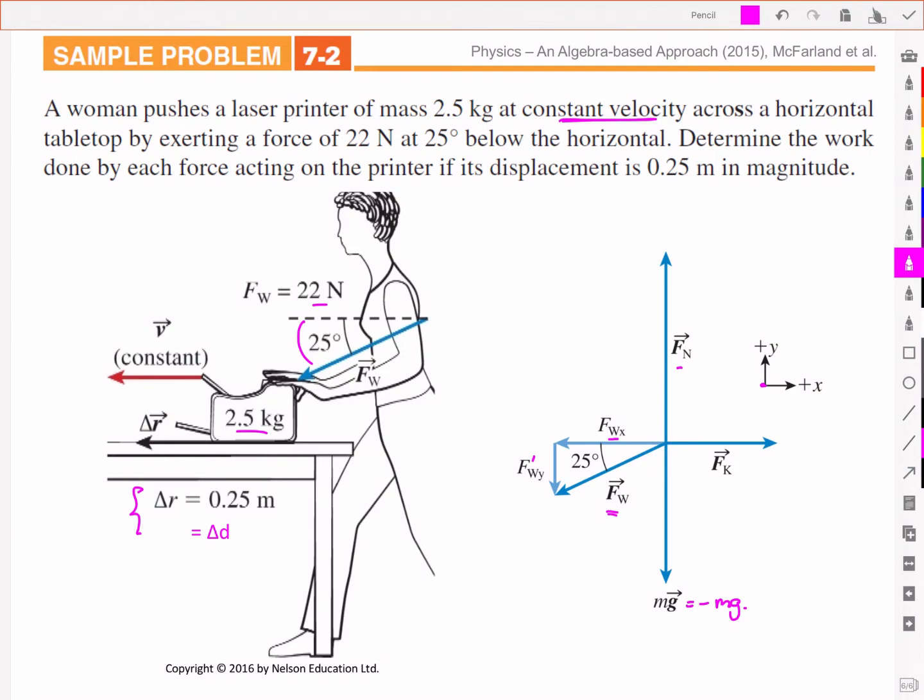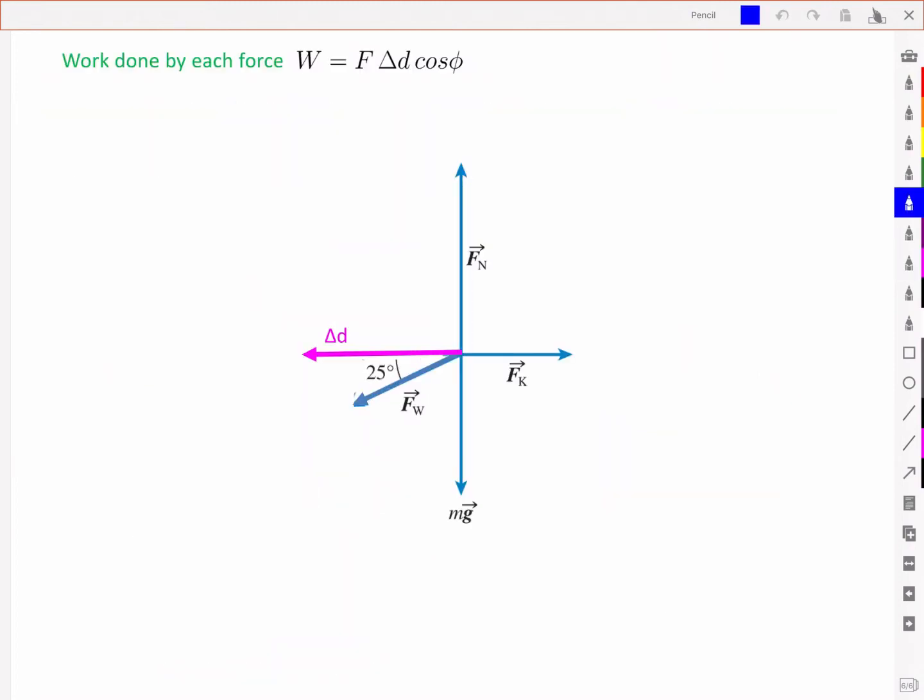We're also told that it's moving at constant velocity, so that tells us that our net force is going to be zero. Now you're asked to find the work done by each force, and we know that work is just F, the applied force, delta D, the displacement, times cos phi, the angle between those two.